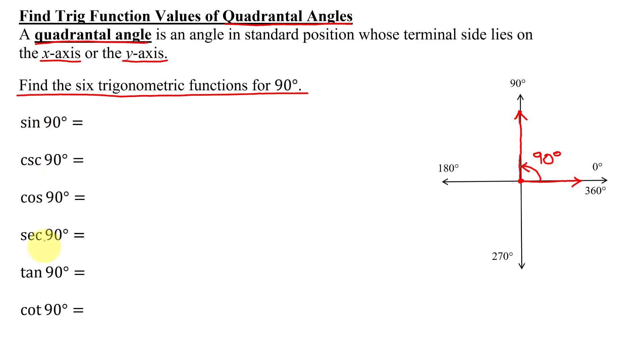Now to find the six trig function values, I'm going to need a point on the terminal side of my angle. There are an infinite number of points on the positive y-axis. It doesn't matter which one I pick. I'm just going to pick an efficient one. Remember, every point on the y-axis has an x-coordinate of 0, and I'm going to pick the easy y value of 1. So for this point, x is 0 and y equals 1.